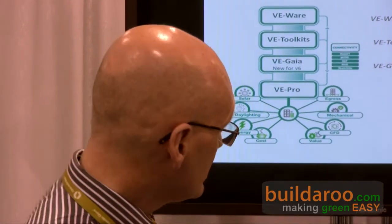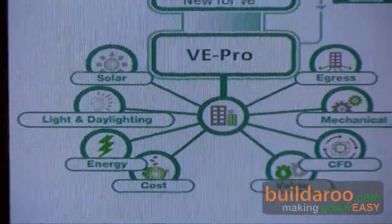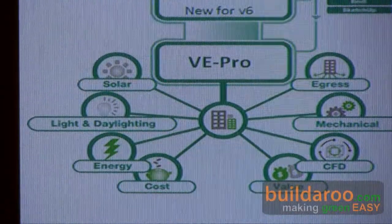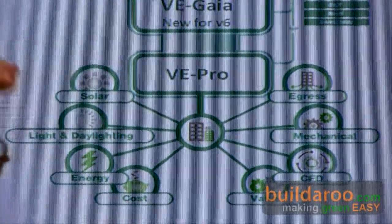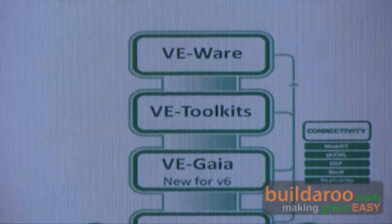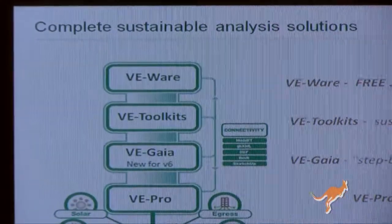The big problem is that most of this technology, to do that effectively, is very complex. How could you get people to use this software who don't have the time or skill to learn it? This is why we've developed four different levels of our software. The base level is our VE Pro software, which enables people to look at things in fine detail. We've also released VE Wear, which is free software that allows anyone to get access to powerful technology in a very simple and easy to use way.